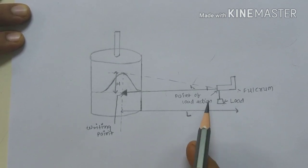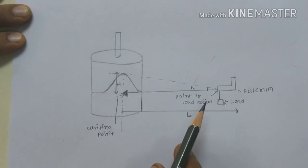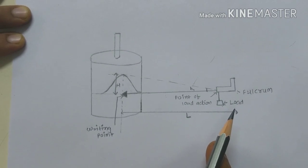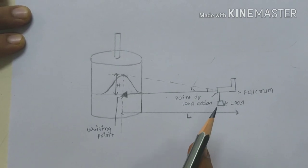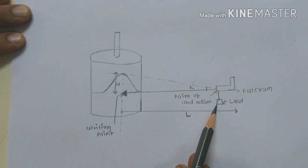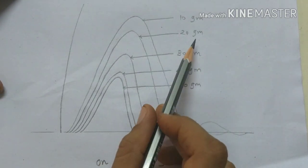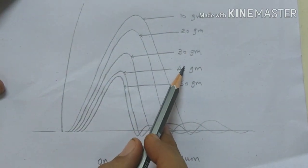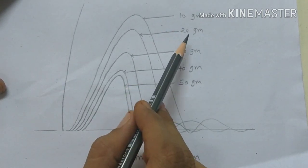Now record the simple muscle twitch. Then, without changing the point of stimulation and strength of stimulus, repeat the procedure by adding 10 grams of weight every time. This kind of simple muscle curves will be obtained with increasing load each time.